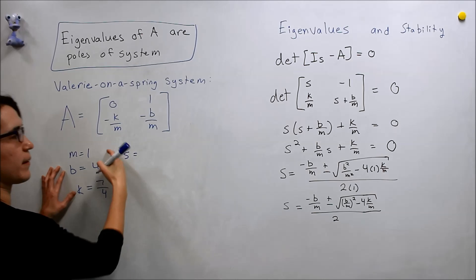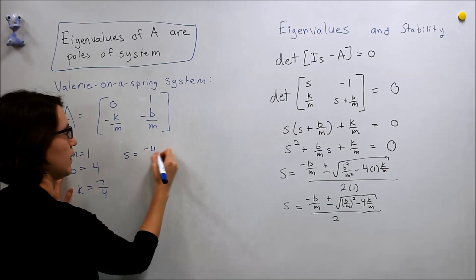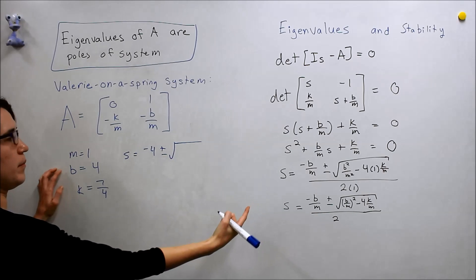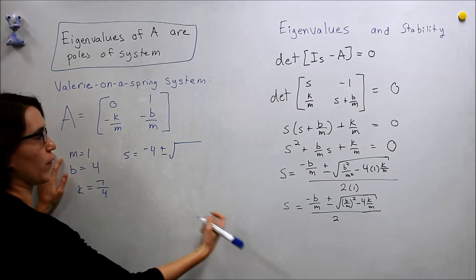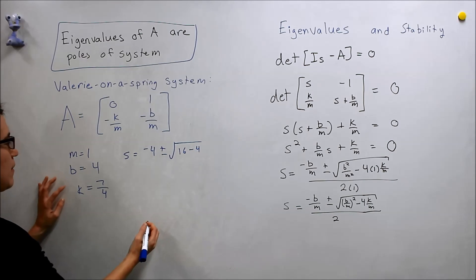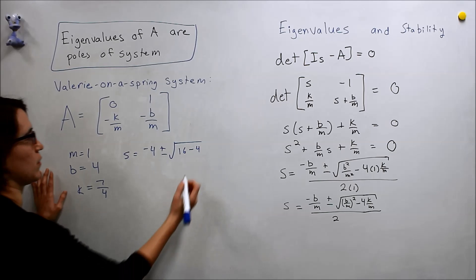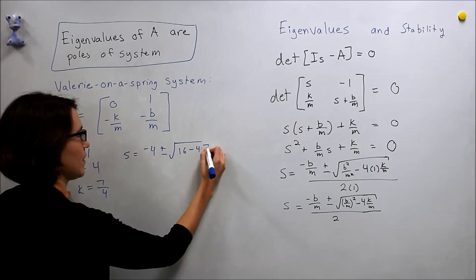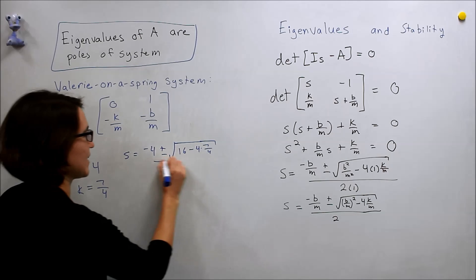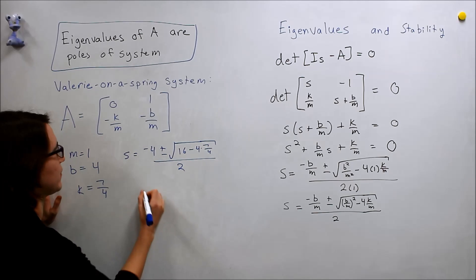Well, we get 4 divided by 1, so we get negative 4, plus or minus, so B over M again is 4, so this time it's squared, so it's 16, minus 4 times K divided by M. So we get times 7 over 4. And this is all divided by 2.